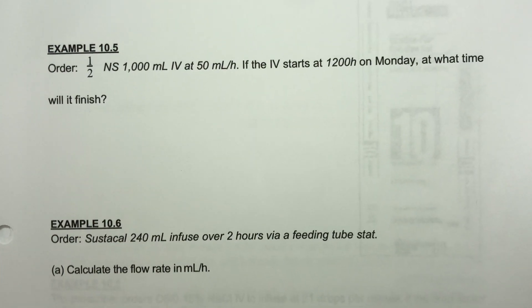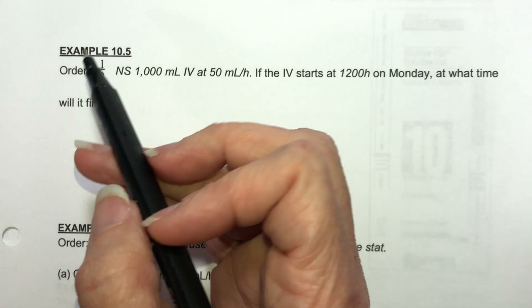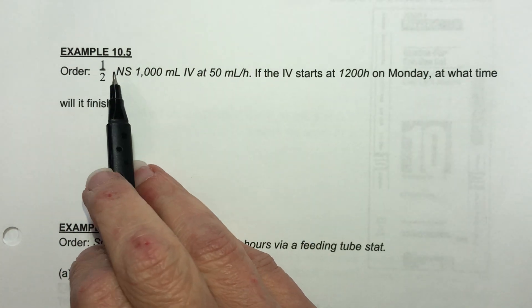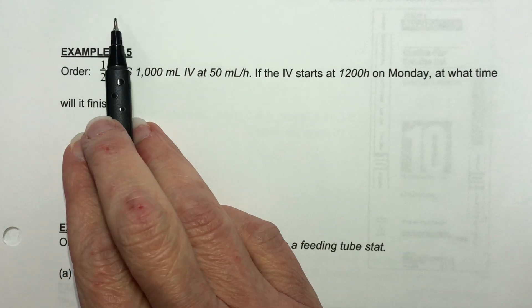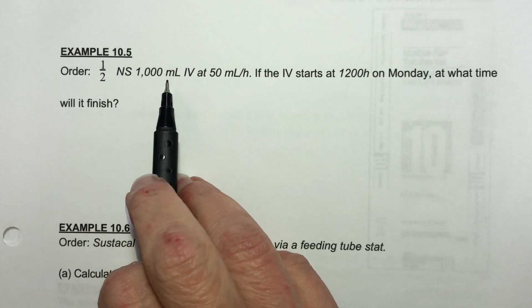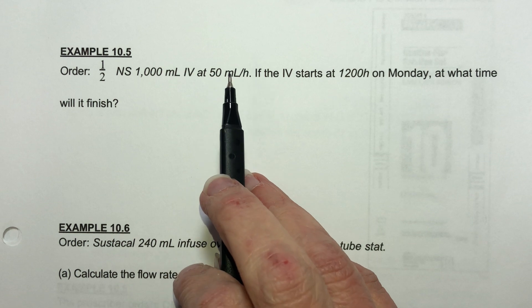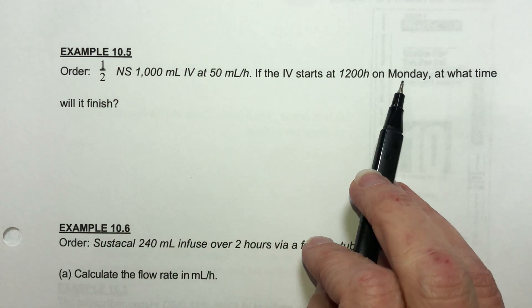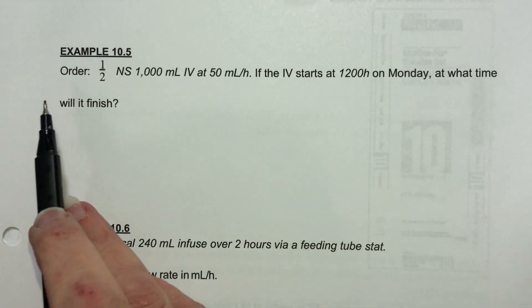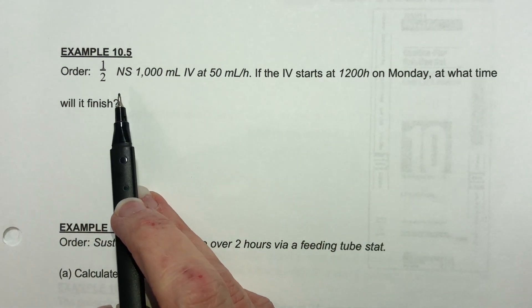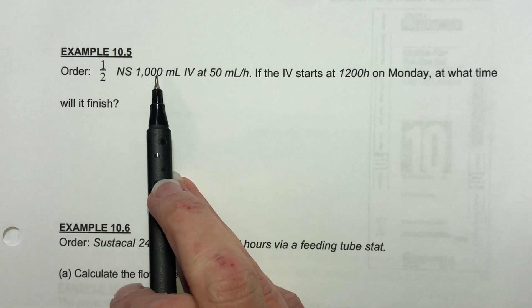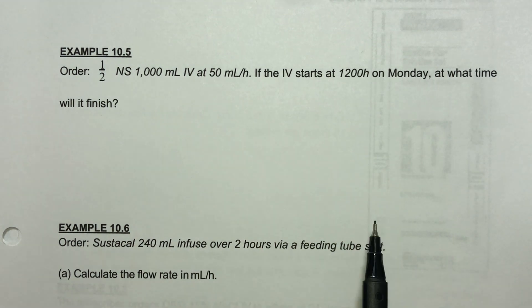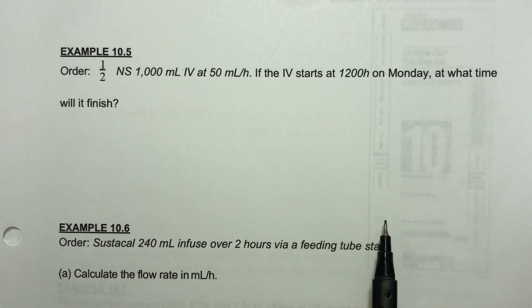Number five. The order is half strength saline solution. We don't have to worry about that. We need 1,000 milliliters at 50 milliliters per hour. If the IV starts at noon on Monday at what time will it finish? We need to figure out how many hours it's going to take to get this thing done and then we're going to have to add it to noon and figure out what time it works out.